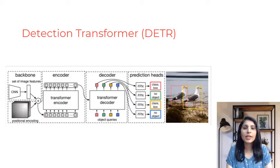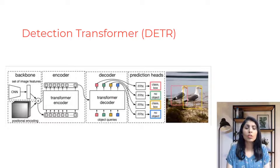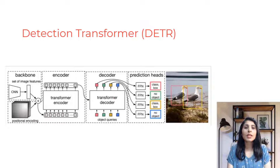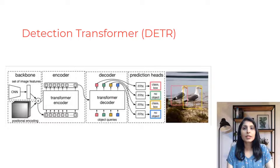Hello everyone, my name is Aron. In today's video I will show you how to work with the Detection Transformer, also known as DETR. It is an object detection model that uses a transformer architecture. The DETR model was introduced in the research paper titled 'End-to-End Object Detection with Transformers,' published by researchers from Facebook AI Research in 2020.